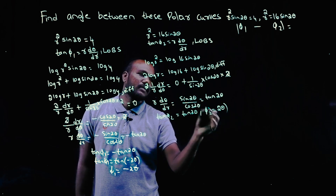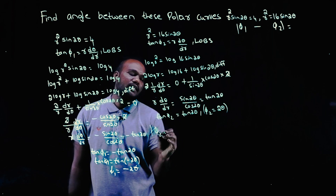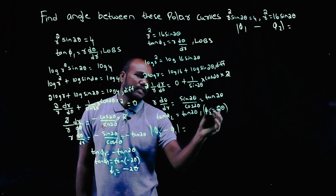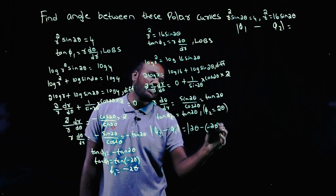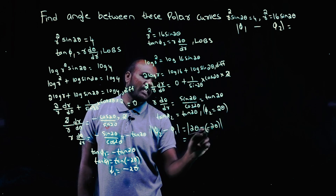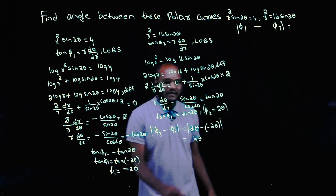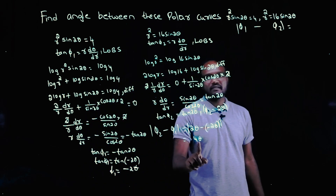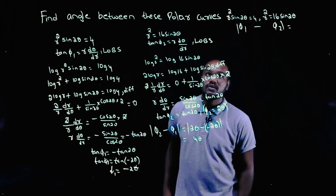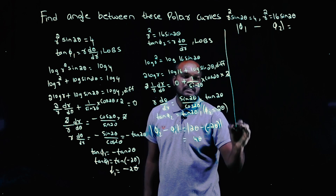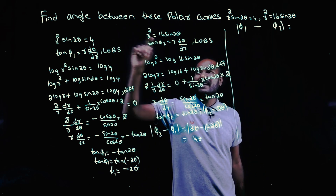Now we have both φ1 and φ2. The angle between the curves is |φ2 - φ1| = |2θ - (-2θ)| = |2θ + 2θ| = 4θ. So the angle is 4θ. We can find the value of θ to get the numerical answer.